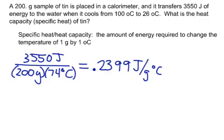And that's not the right number of sig figs. It looks like we need 2 sig figs because 26 degrees Celsius only has 2 sig figs, so we're going to round it to 0.24 joules for every gram degree Celsius.